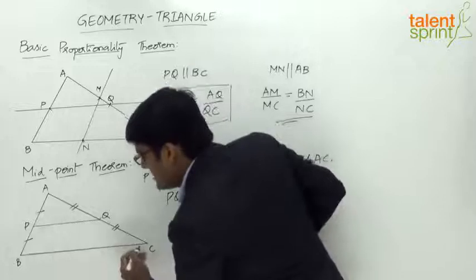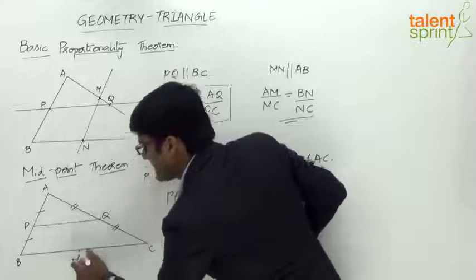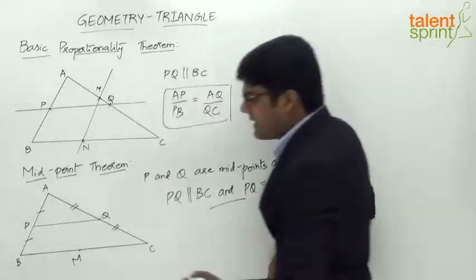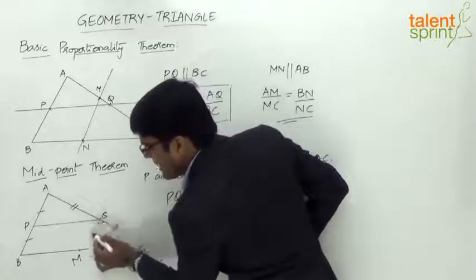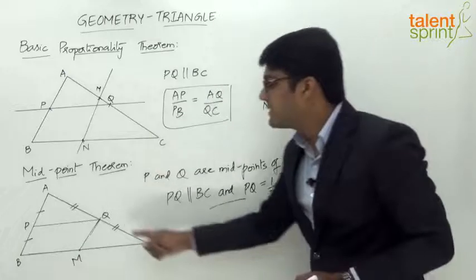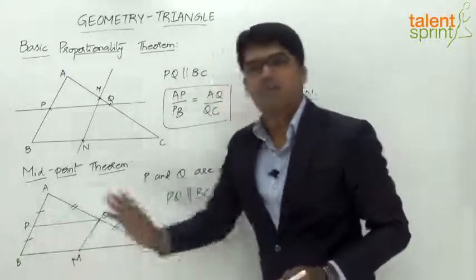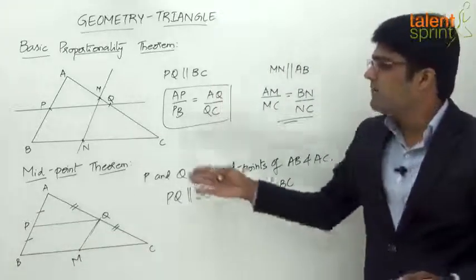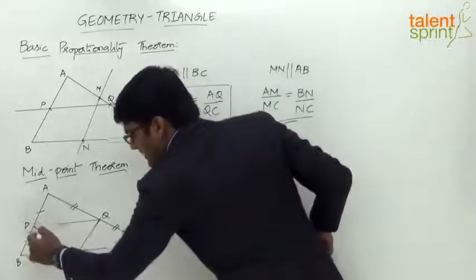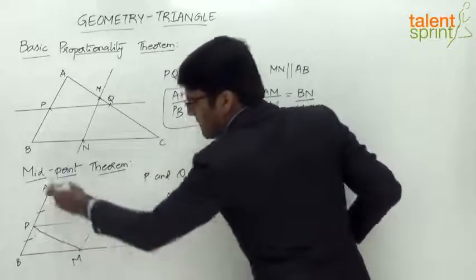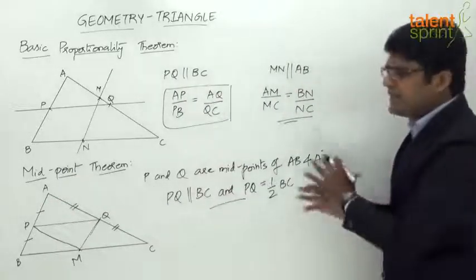Let's say we consider the midpoint of side BC, approximately at point M. If we connect Q — the midpoint of AC — with M, we get line QM. As per the Midpoint Theorem, QM will be parallel to the third side AB, and QM = (1/2) AB. Similarly, connecting midpoints P and M gives line PM, which will be parallel to AC and PM = (1/2) AC.